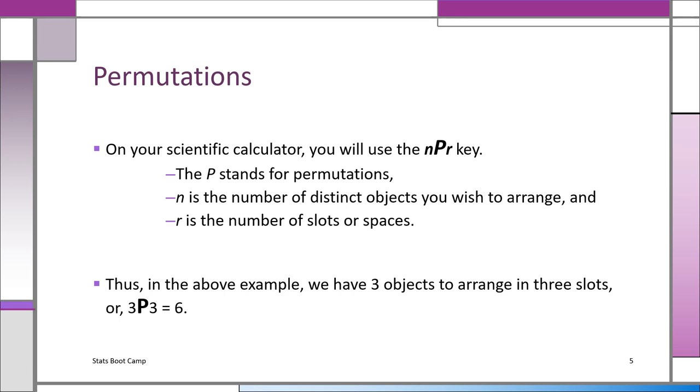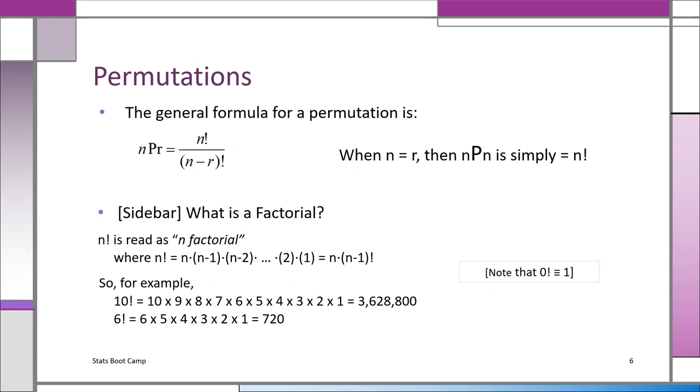So the previous example, we had three objects, A, B, C, to arrange in three slots, and that becomes three permutation three, which is three factorial, which is three times two times one, which is six. The general formula for permutation is NPR is N factorial divided by N minus R factorial. Thus, when N equals R, then NPN is just N factorial.